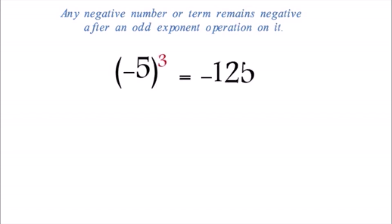Any negative number or term remains negative after an odd exponent operation on it. Example: negative 5 cubed equals negative 125. Notice the exponent 3 is an odd number. Hence, the answer is negative.